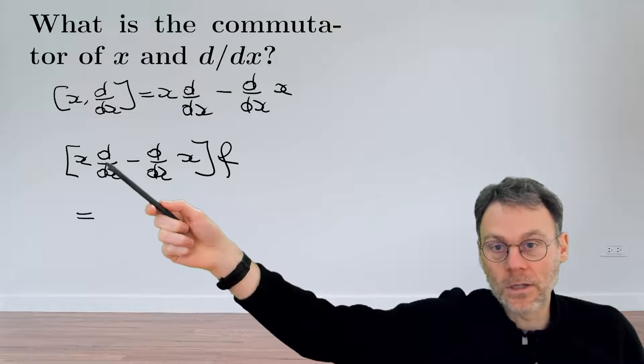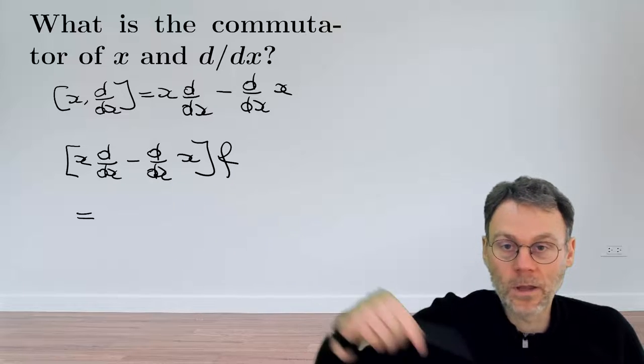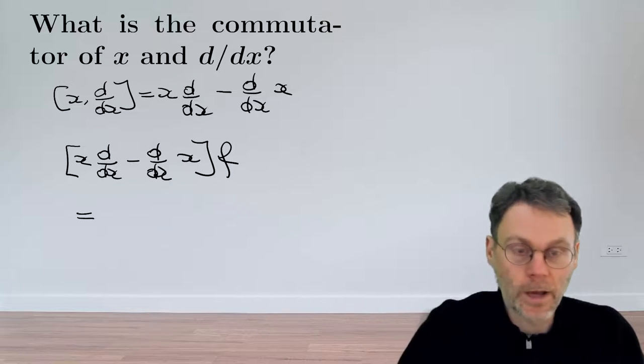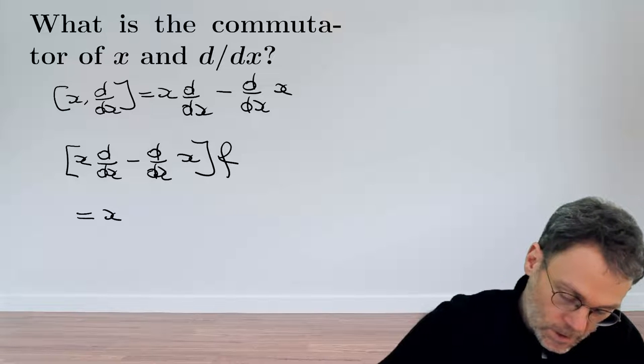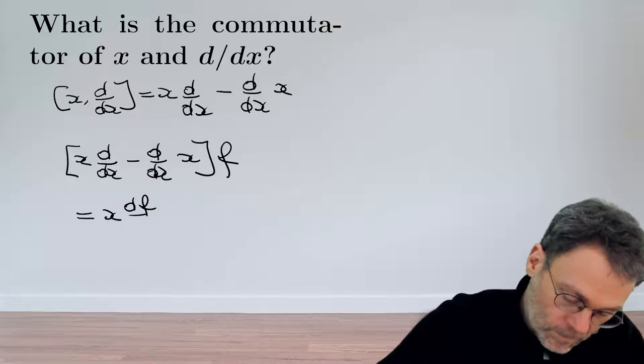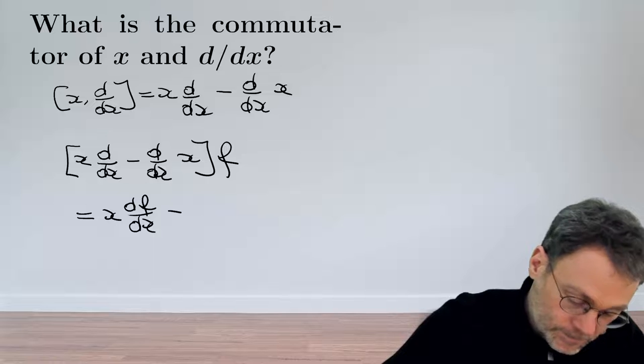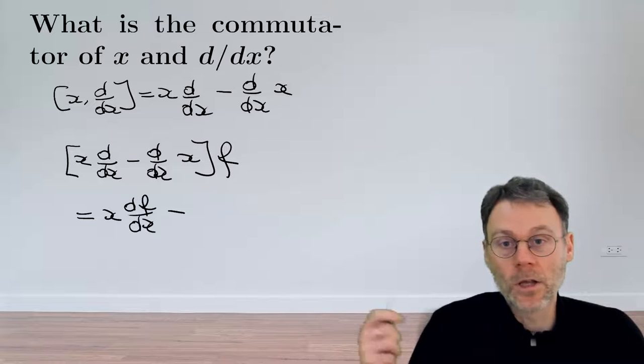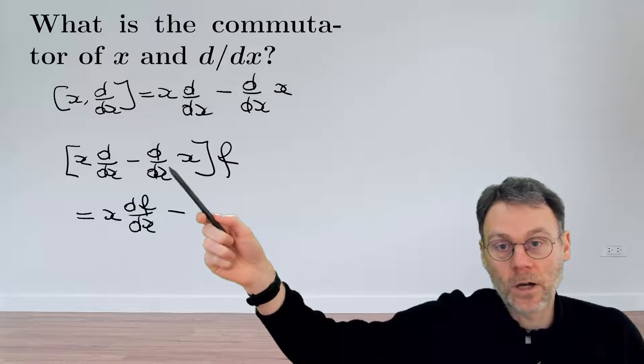First, we have the operator d/dx operating upon f, and then we multiply by x. That gives us x df/dx. For the second term, the first operator that f encounters is the one immediately to its left.